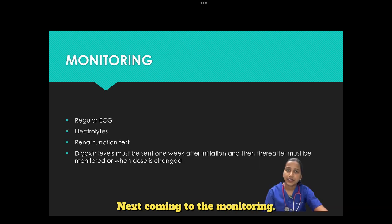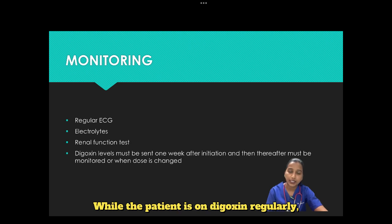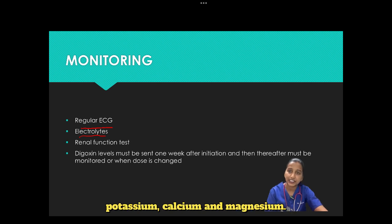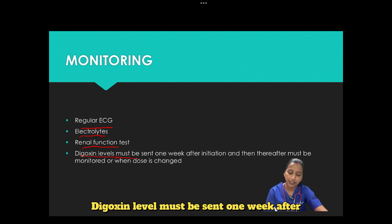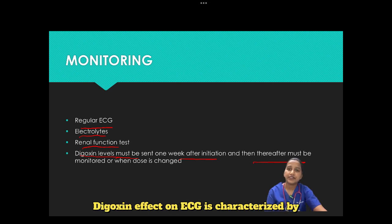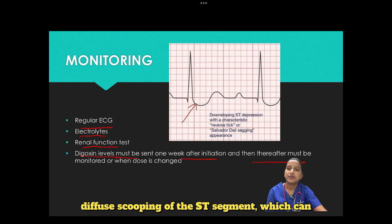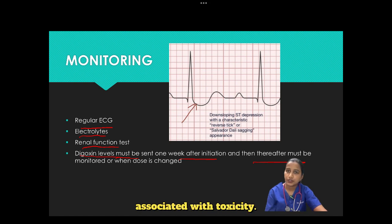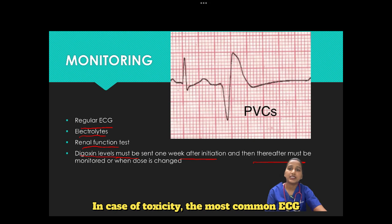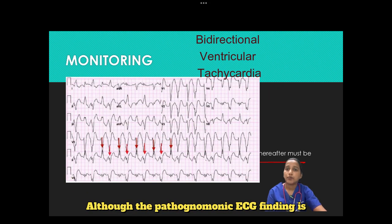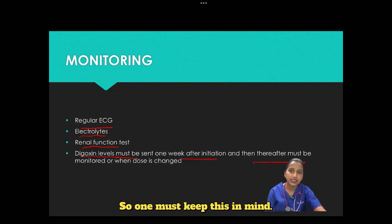For monitoring while the patient is on digoxin: ECG must be regularly monitored; electrolytes — potassium, calcium, and magnesium — must be checked; renal function tests must be monitored regularly. Digoxin levels must be sent one week after initiation and thereafter when the dose is changed. The digoxin effect on ECG is characterized by diffuse scooping of the ST segment, which can be seen at therapeutic levels and is not associated with toxicity. In toxicity, the most common ECG finding is frequent PVCs, while the pathognomonic finding is bidirectional ventricular tachycardia.